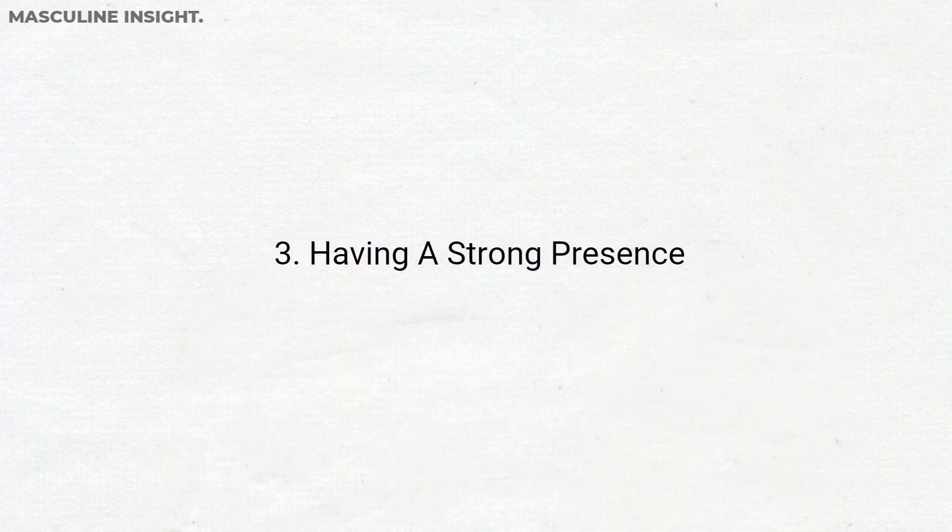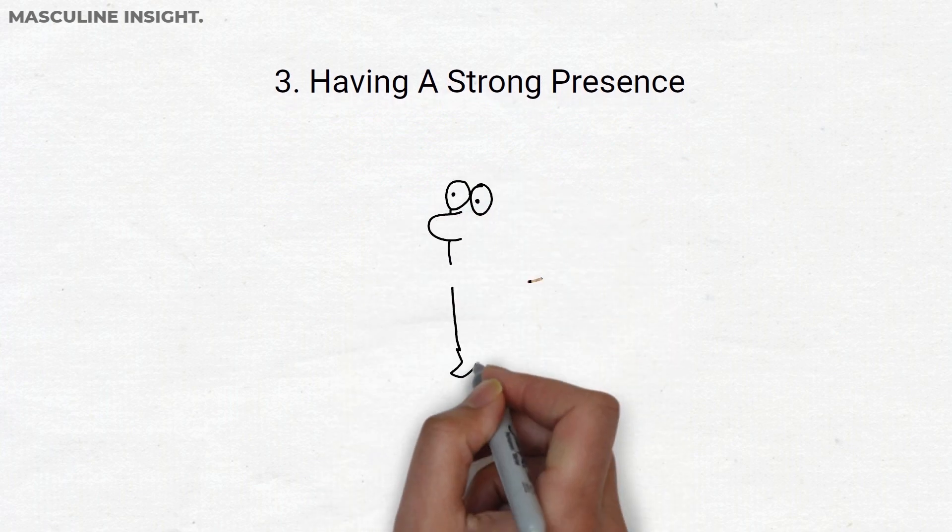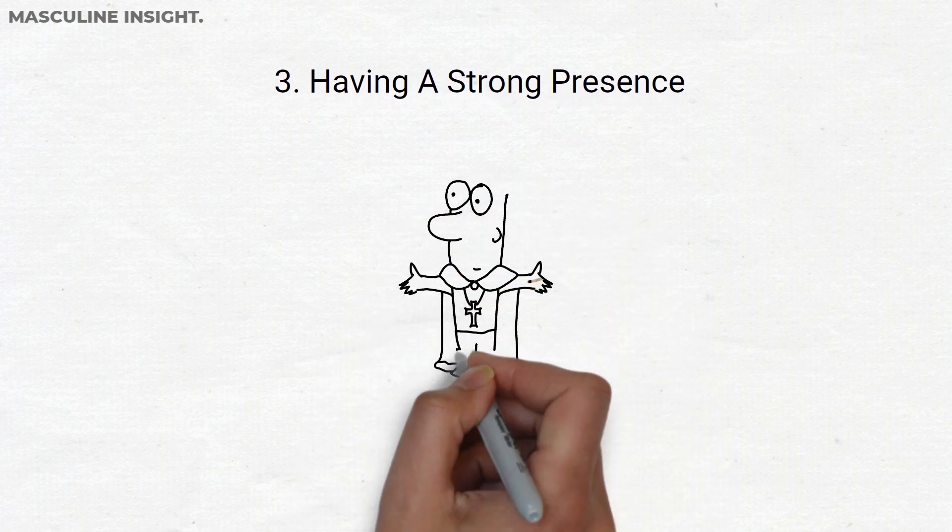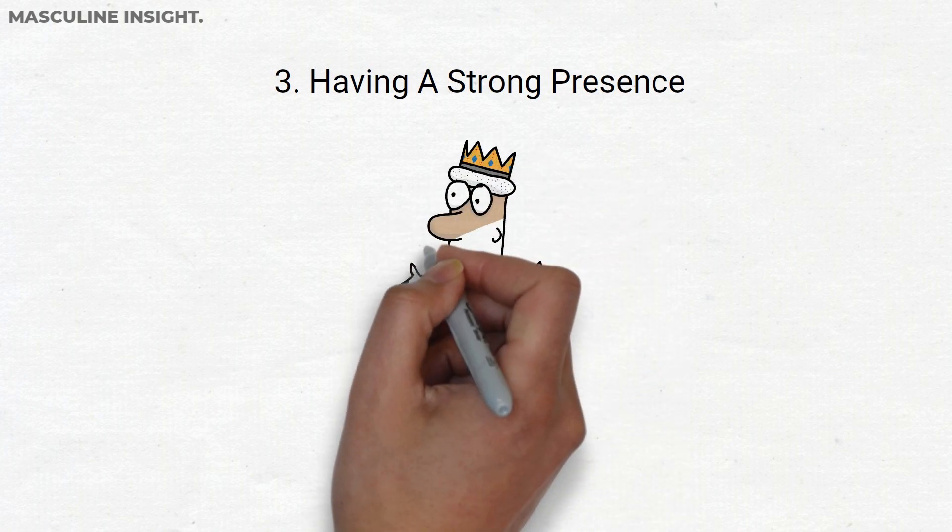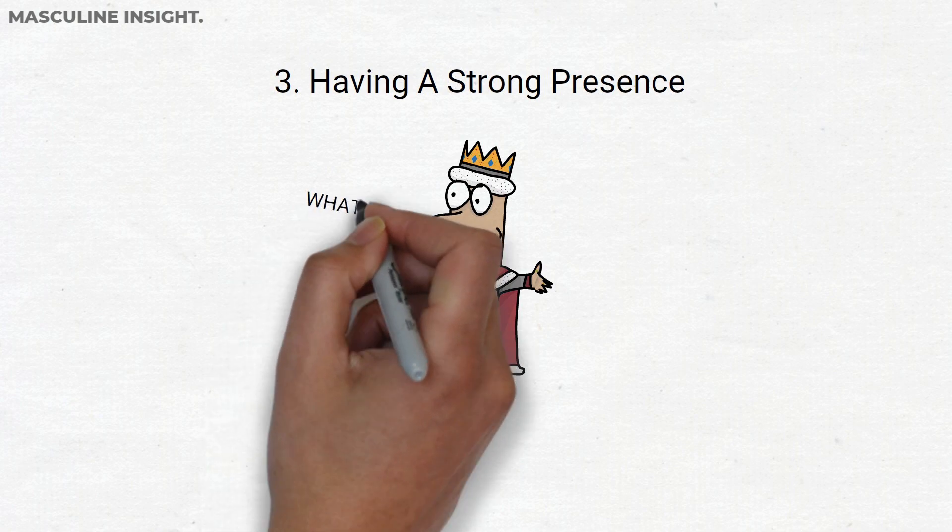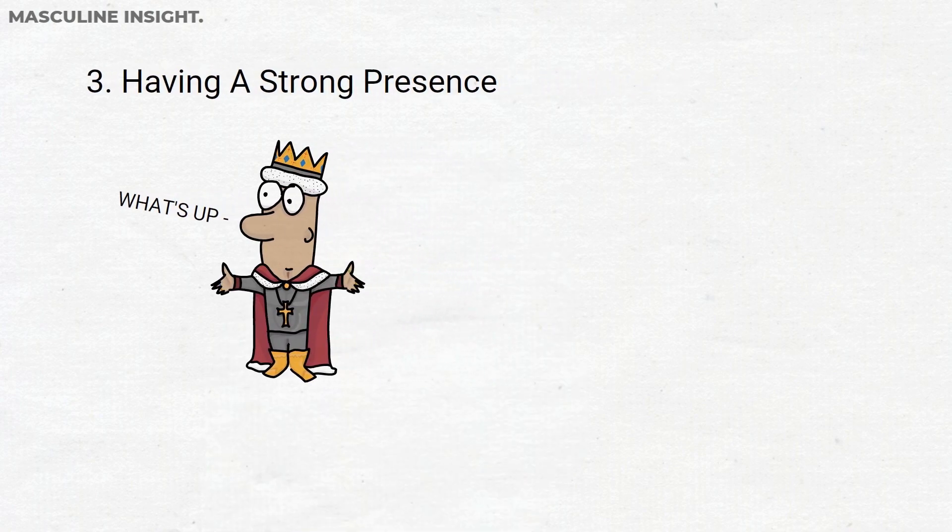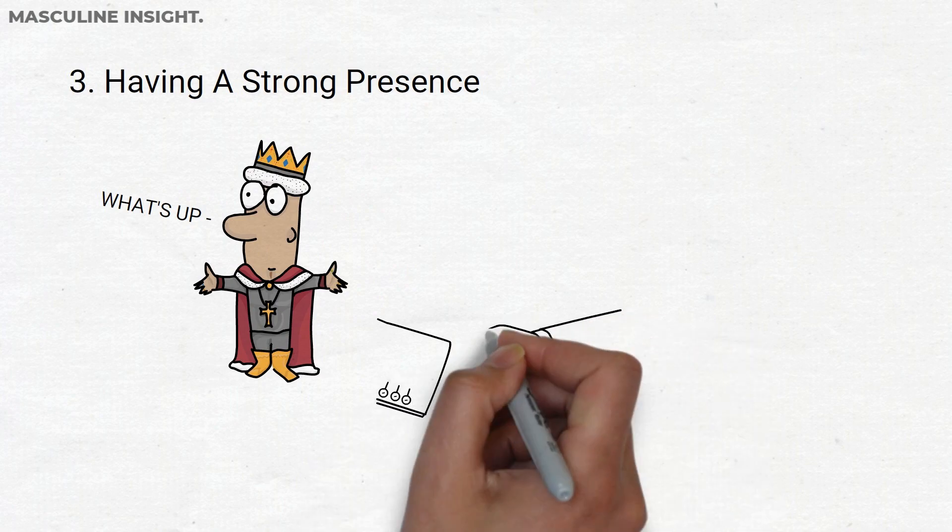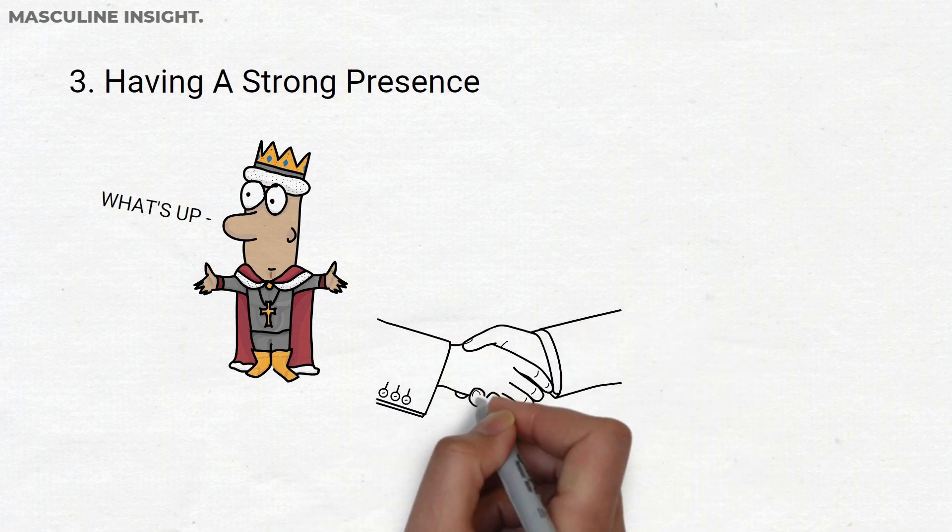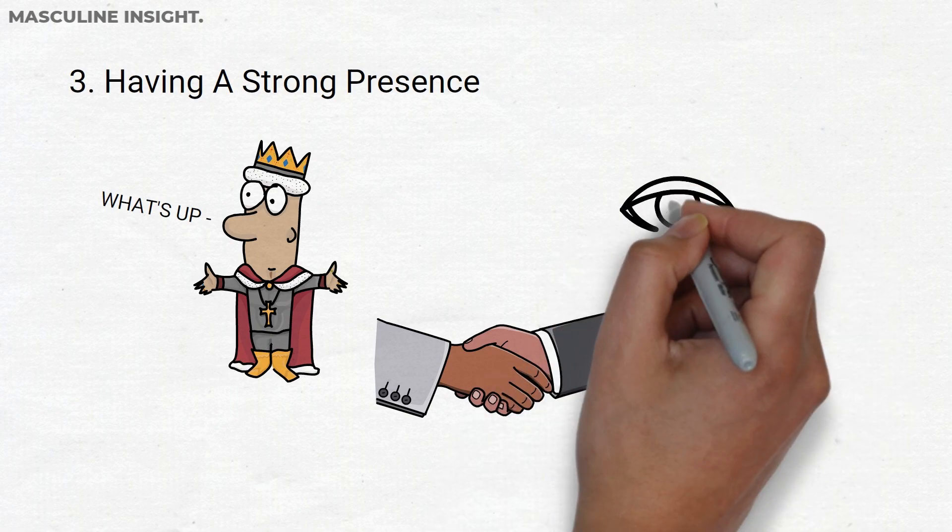3. Having a strong presence. Have you ever noticed that some men have a strong presence? They command respect just by walking into a room without saying a word. This is not some magical gift that these men have, but rather a skill that can be learned. A strong presence is made up of many small habits and actions. You should have a firm handshake, make eye contact when you talk to people, and walk with your chest out.